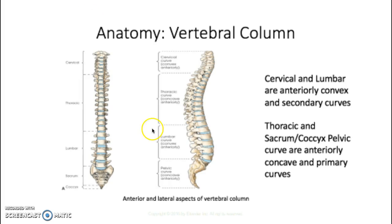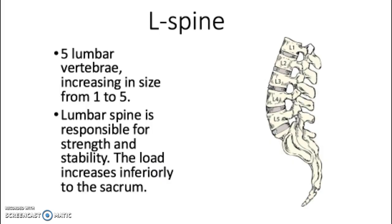There are five lumbar vertebrae increasing in size from L1 to L5 — you count from the top to the bottom. The lumbar spine is responsible for strength and stability in your body. The load increases inferiorly into the sacrum, which is the center of your base of support. The increasing size helps with stability and carrying the load of your body.